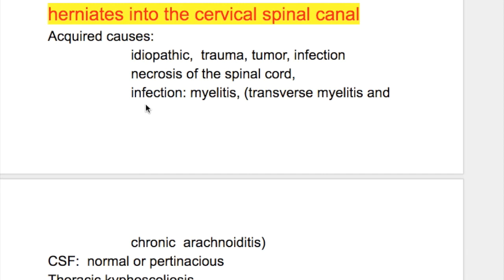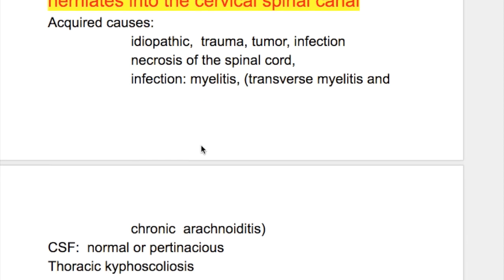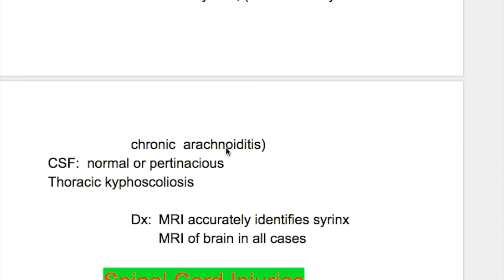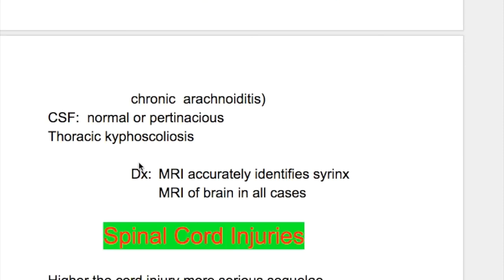Infections that usually cause syringomyelia include myelitis, transverse myelitis, and chronic arachnoiditis. CSF may be normal or proteinaceous. The patient may have thoracic kyphoscoliosis. MRI accurately identifies the syrinx in the spinal cord, and MRI of the brain should be done in all cases.